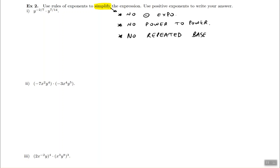They also want us to have the answer written with positive exponents. That's part of the word simplify, so it's kind of redundant there.